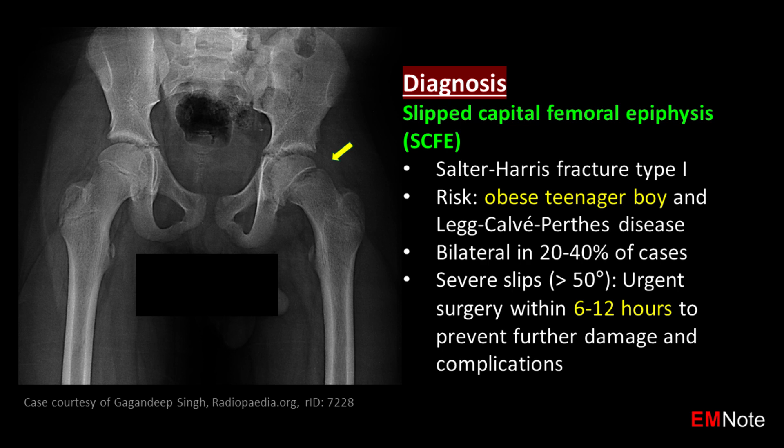Slipped capital femoral epiphysis is classified as a Salter-Harris type 1 fracture. Risk factors include obesity, being a teenager, and male sex. It can occur bilaterally in 20–40% of cases. Severe slips greater than 50 degrees require urgent surgery within 6–12 hours to prevent further damage and complications.